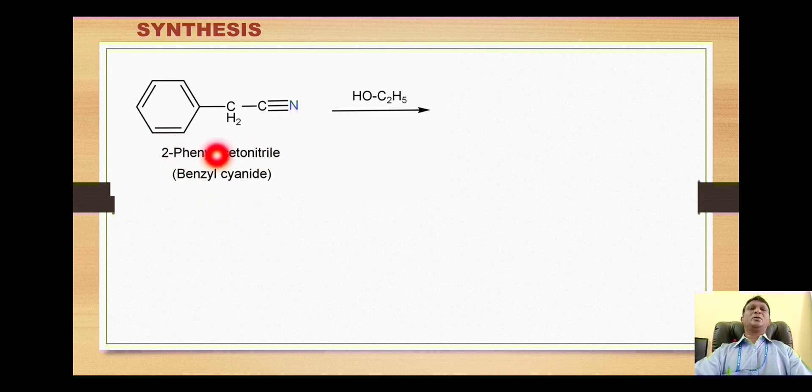This starting material is called benzyl cyanide. This is the benzyl group and this is cyanide, so it is benzyl cyanide. In IUPAC nomenclature we will use the nitrile, so it is a two-carbon chain, so it is acetonitrile.